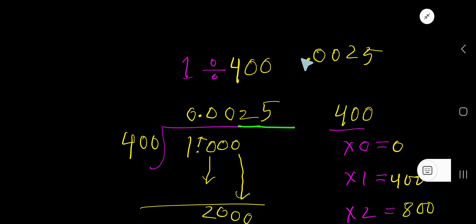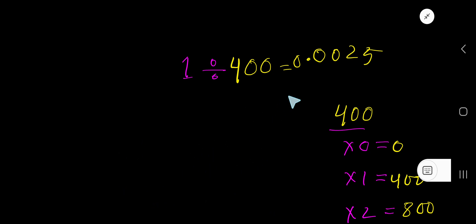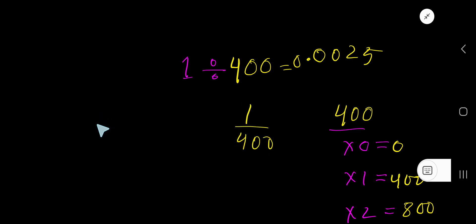You can add a 0 here. 0.0025 is the answer. Here is a simple trick that will help you solve this problem more quickly. Look: 1 divided by 400 — just divide this fraction without the extra zeros, so divide 1 by 4.